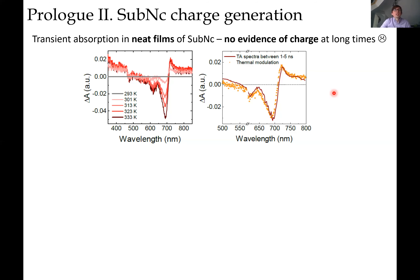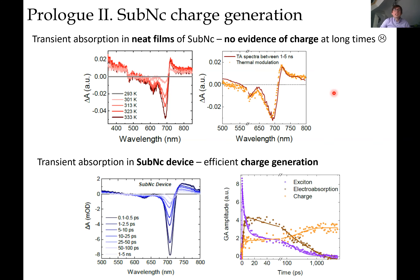We tried to understand how this small molecule by itself can lead to charge generation. Using transient absorption spectroscopy on a pure film of SubNC, we realized the signals we see at long times are artifacts of heating up the sample. If you just take a pure SubNC film and create an exciton, it eventually relaxes but no charges are generated. However, if you make a device, you will get current.